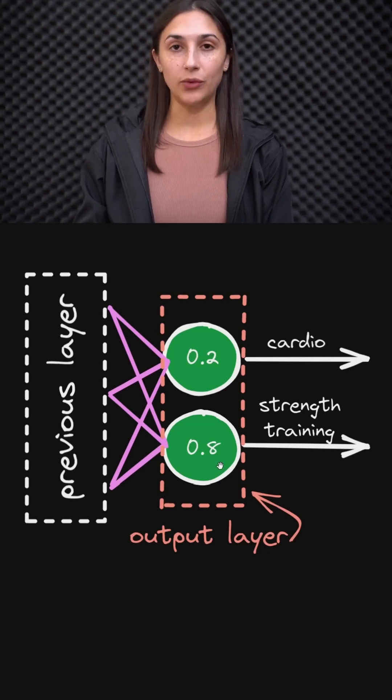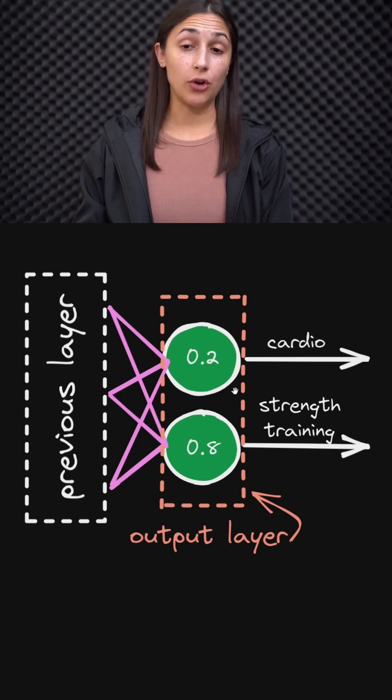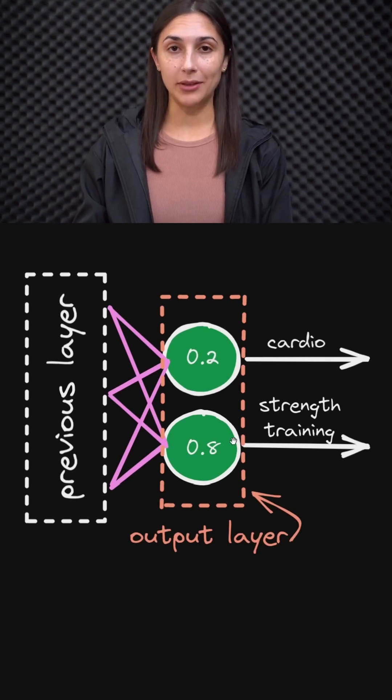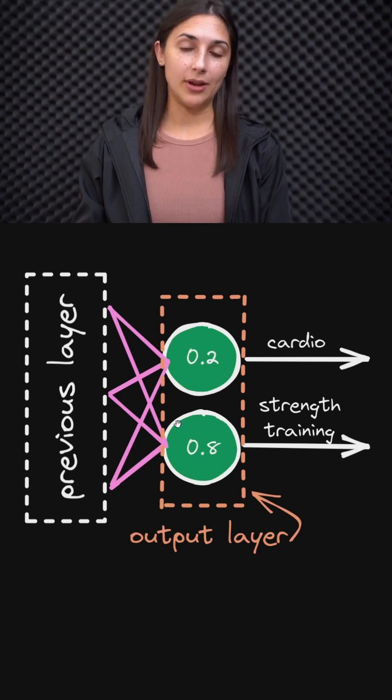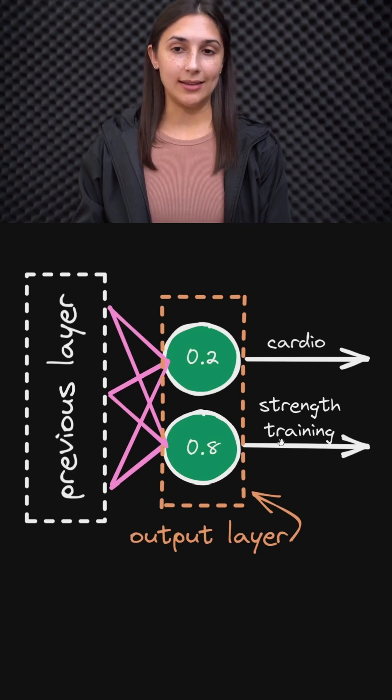And for classification tasks, we can interpret these values across all possible outputs as a probability distribution among the output classes. So for the sample that we just passed to the network of the height and weight, the network is outputting an 80% probability that this individual should focus on strength training, and only a 20% probability that they should focus on cardio.